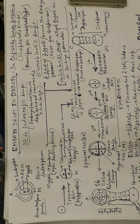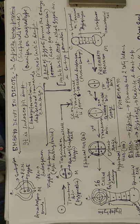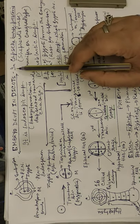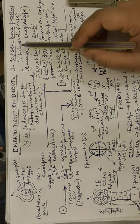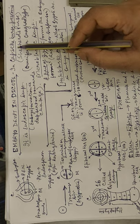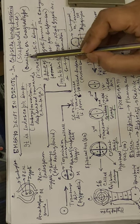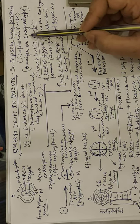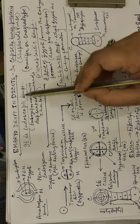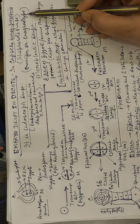Hello students, welcome to my botany class. Today I'll teach you embryo development in dicot plants of angiosperms through this chart. The type study we use is Capsella bursa-pastoris, commonly known as shepherd's purse. It is a crucifer or onagrad type, so this embryo development is also called the crucifer or onagrad type of embryogeny.